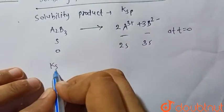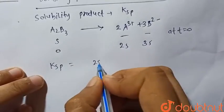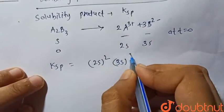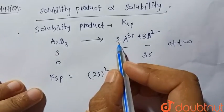So Ksp will be equal to (2S) squared and (3S) cubed, that is 2S squared.